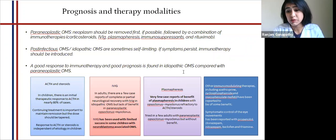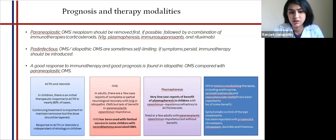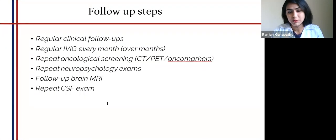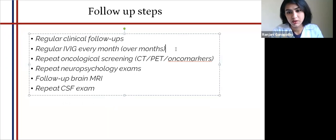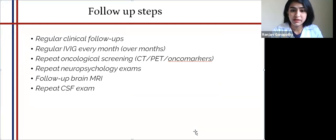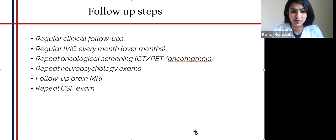We can also do symptomatic control of the eye movements with propranolol and clonazepam. For follow-up, in our patient where we weren't able to identify the etiology, we have to do regular clinical follow-ups and long-term treatment until the symptomatology is resolved. This includes regular IVIG, repeated screening, repeated CSF exams, repeated neuropsychological exams, and repeated MRI.